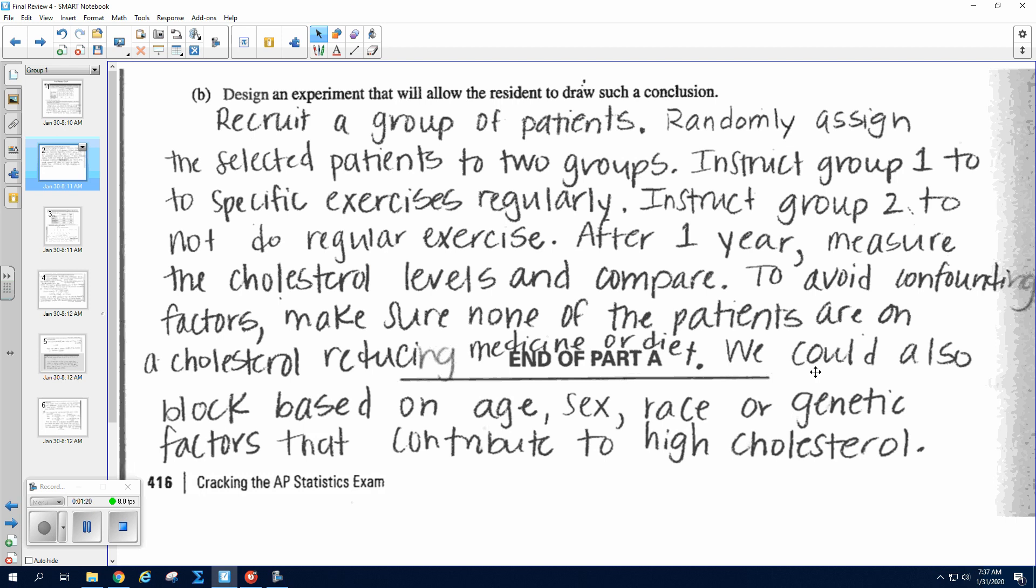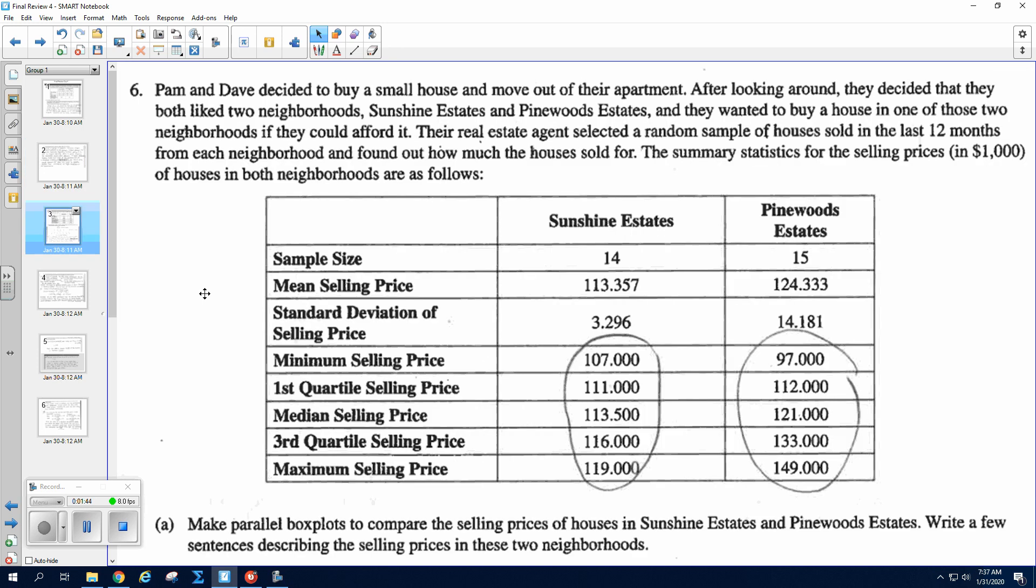And to avoid confounding factors, you could include to make sure that none of the patients are on cholesterol reducing medicine or diet. And if you also wanted to include blocking, you could block on age or gender or race or genetic factors that can also contribute to high cholesterol. All right, so question number six is usually the hardest one.